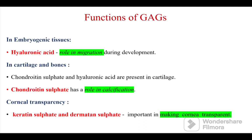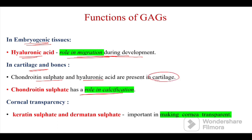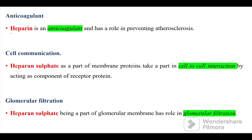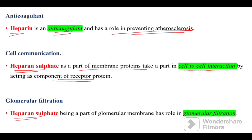The functions of glycosaminoglycans: Hyaluronic acid has a role in cell migration during embryonic development, lubrication in synovial fluid and vitreous humor, and support in cartilage and bones. Chondroitin sulfate has a role in calcification; together with hyaluronic acid it aids lubrication in cartilage. Keratan sulfate and dermatan sulfate in the cornea help maintain corneal transparency. Heparin is an anticoagulant and helps prevent atherosclerosis. Heparin sulfate, present extracellularly, is part of membrane proteins and participates in cell-to-cell interaction as a receptor component, and as part of the glomerular membrane it plays a role in glomerular filtration.